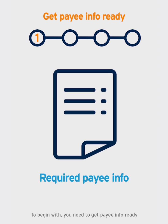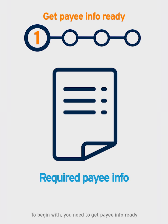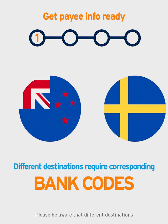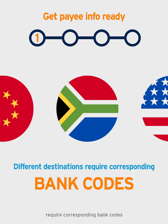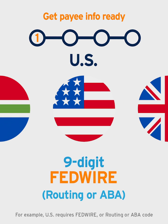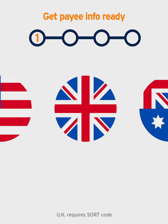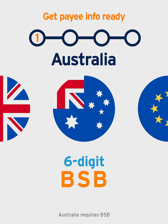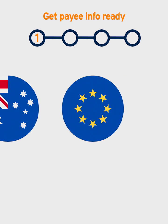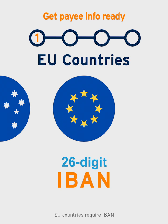To begin with, you need to get payee info ready. Please be aware that different destinations require corresponding bank codes. For example, US requires Fedwire, Routing, or ABA code. UK requires Sort code. Australia requires BSB. EU countries require IBAN.